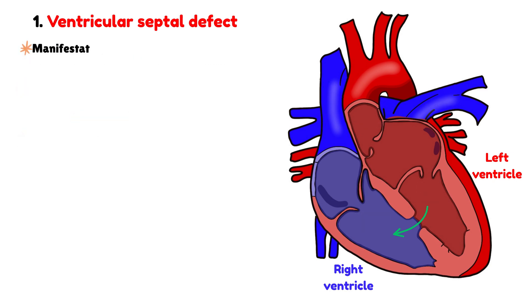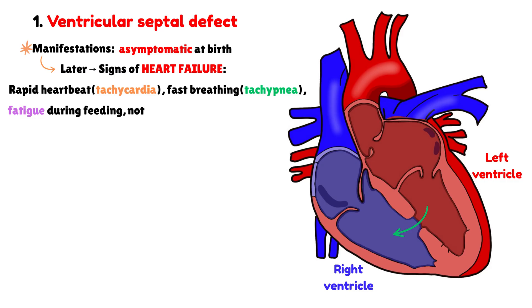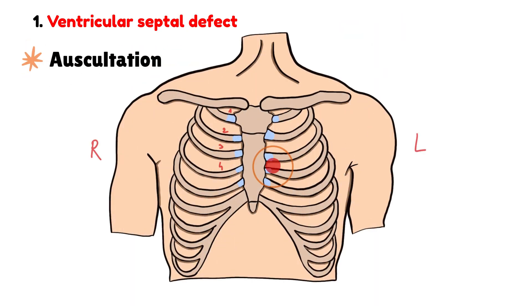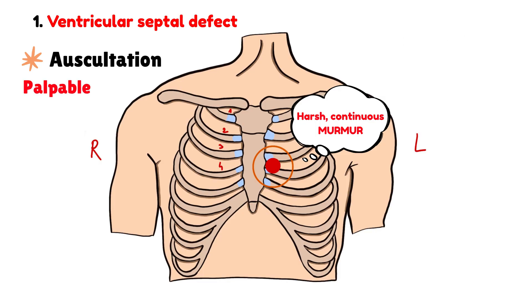At birth, most ventricular septal defects are asymptomatic and may remain so for several days or even weeks. However, over time, the child may begin to show signs of heart failure, such as a rapid heartbeat, fast breathing, fatigue during feeding, and noticeable sweating. Because of the increased blood flow toward the lungs, recurrent pulmonary infections may also develop. When we listen to the heart with a stethoscope, best detected along the left lower sternal border around the fourth intercostal space, we can usually hear a harsh, continuous murmur, often accompanied by a palpable thrill, reflecting the turbulent flow of blood between the two ventricles.